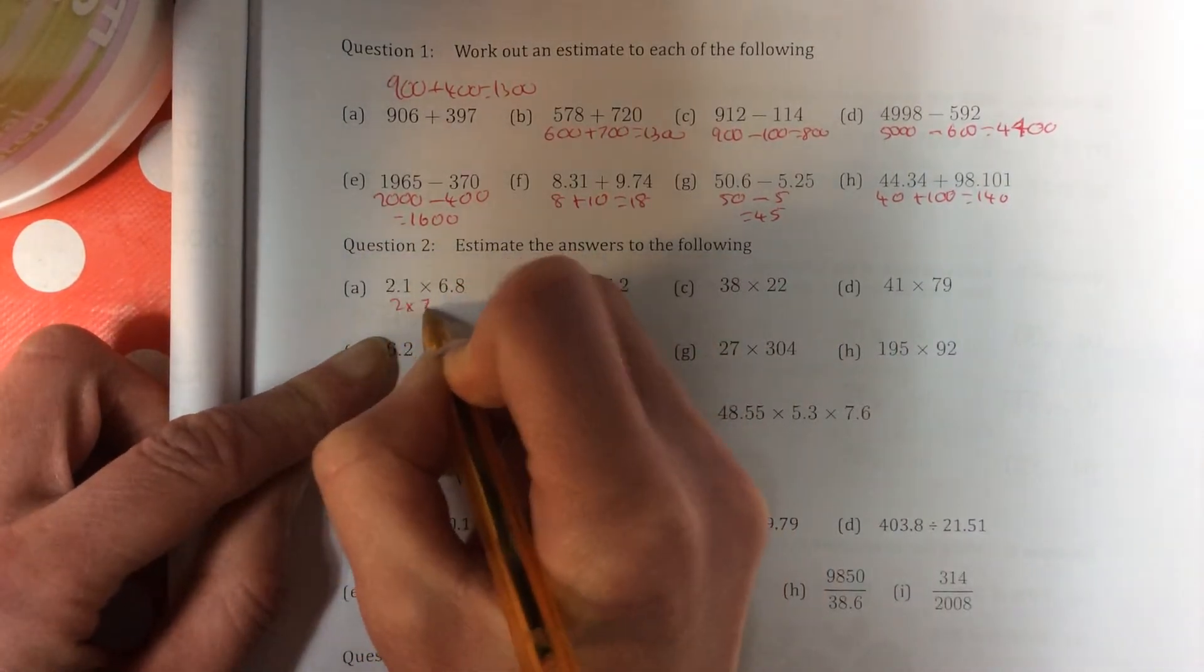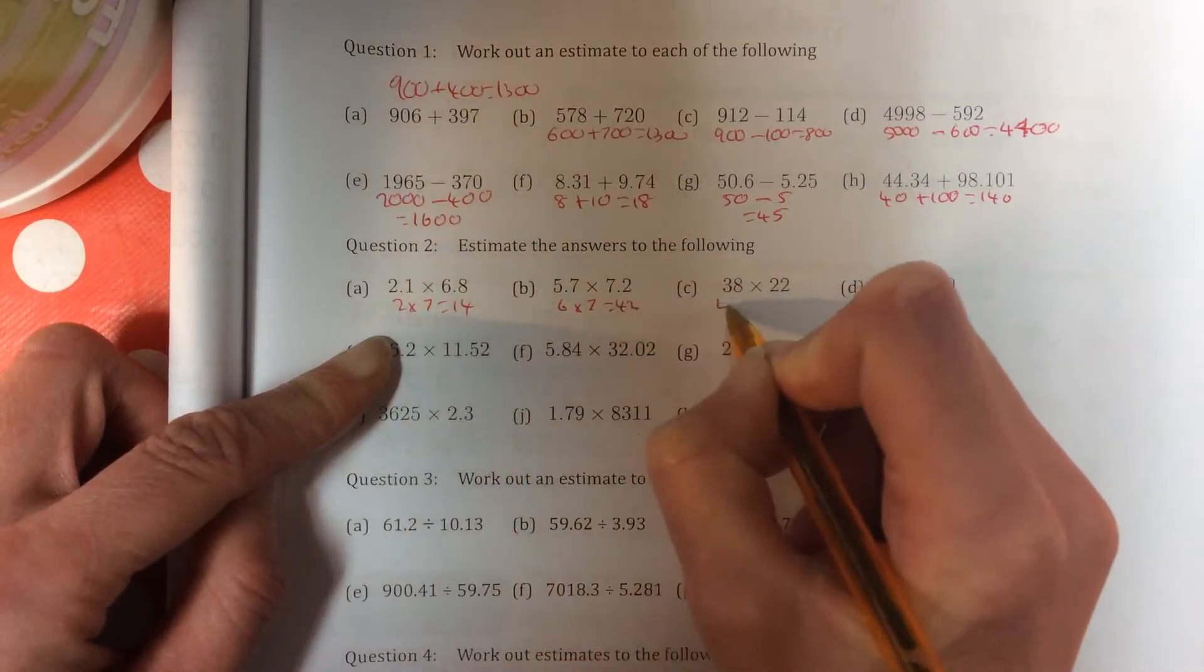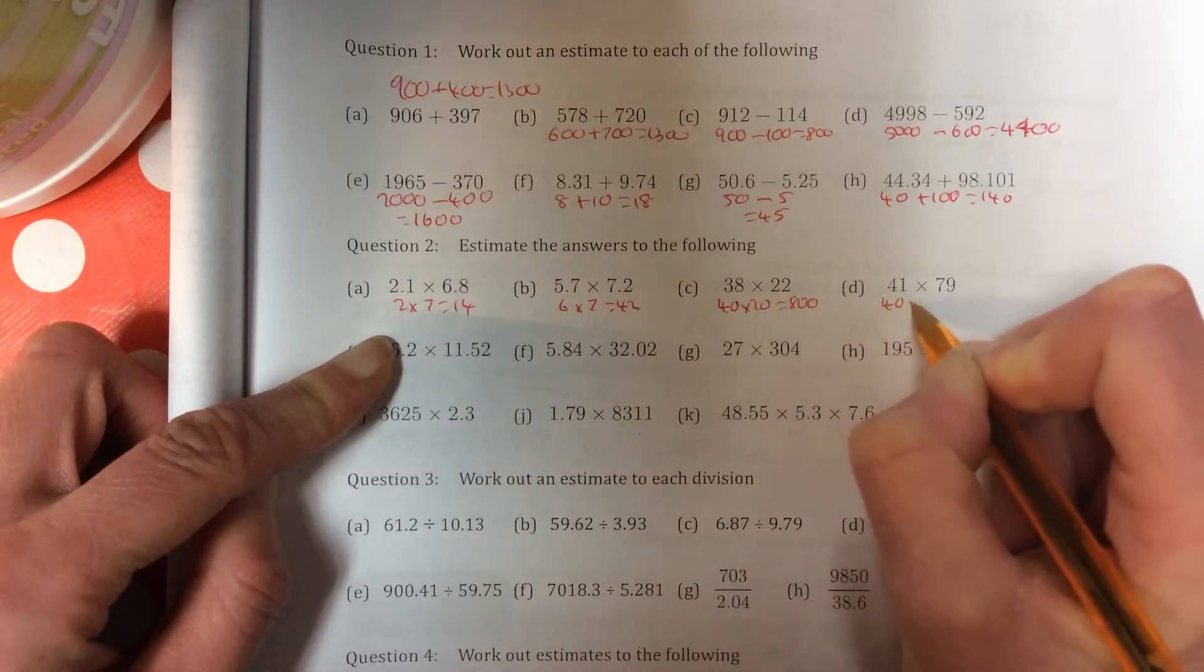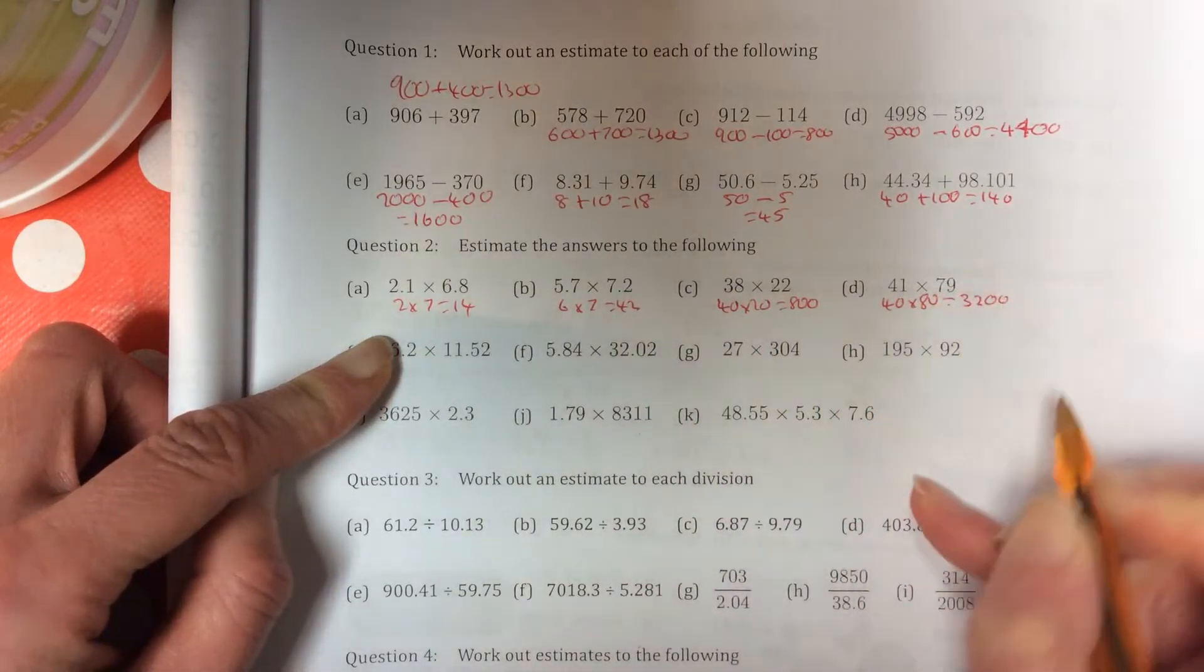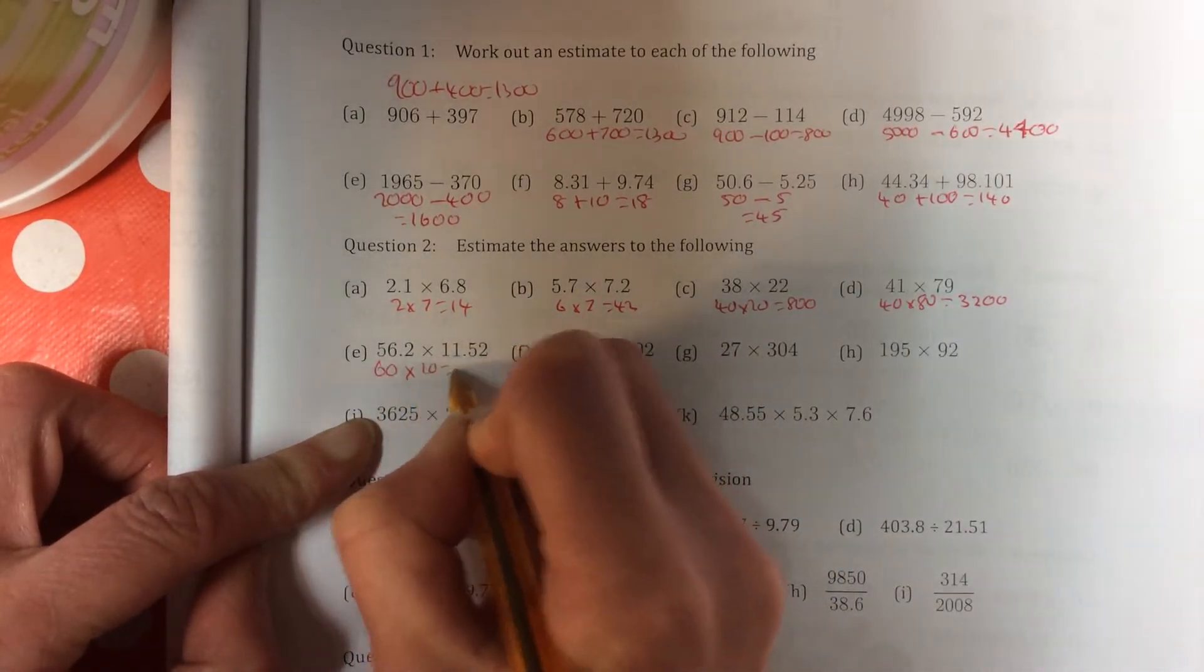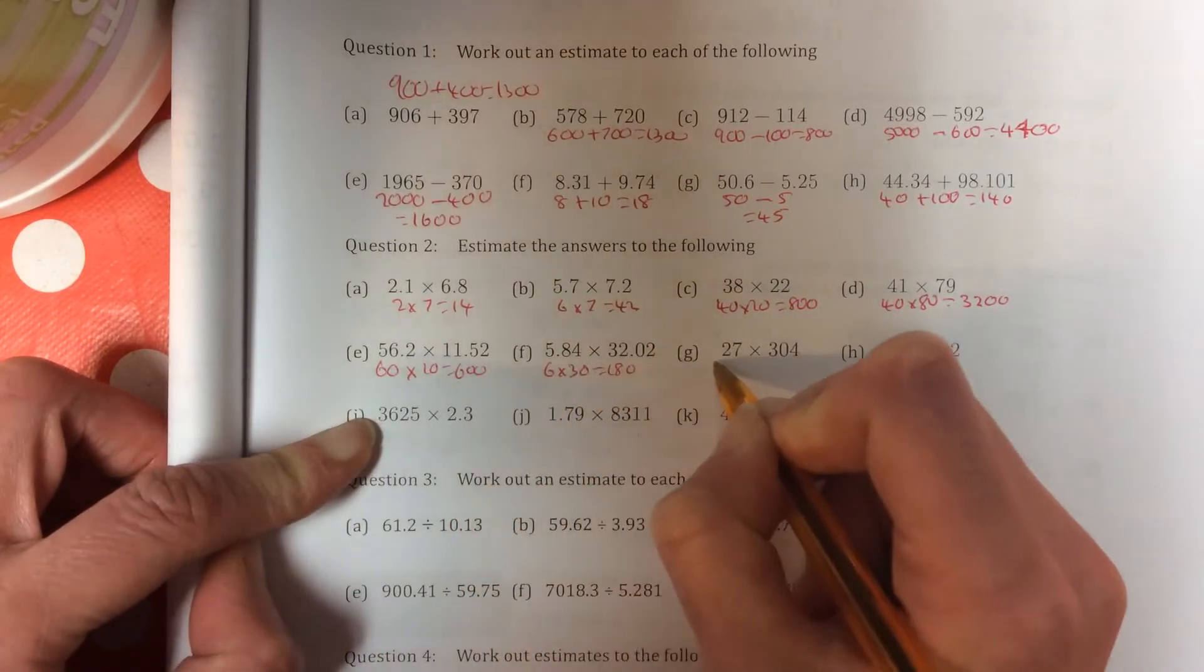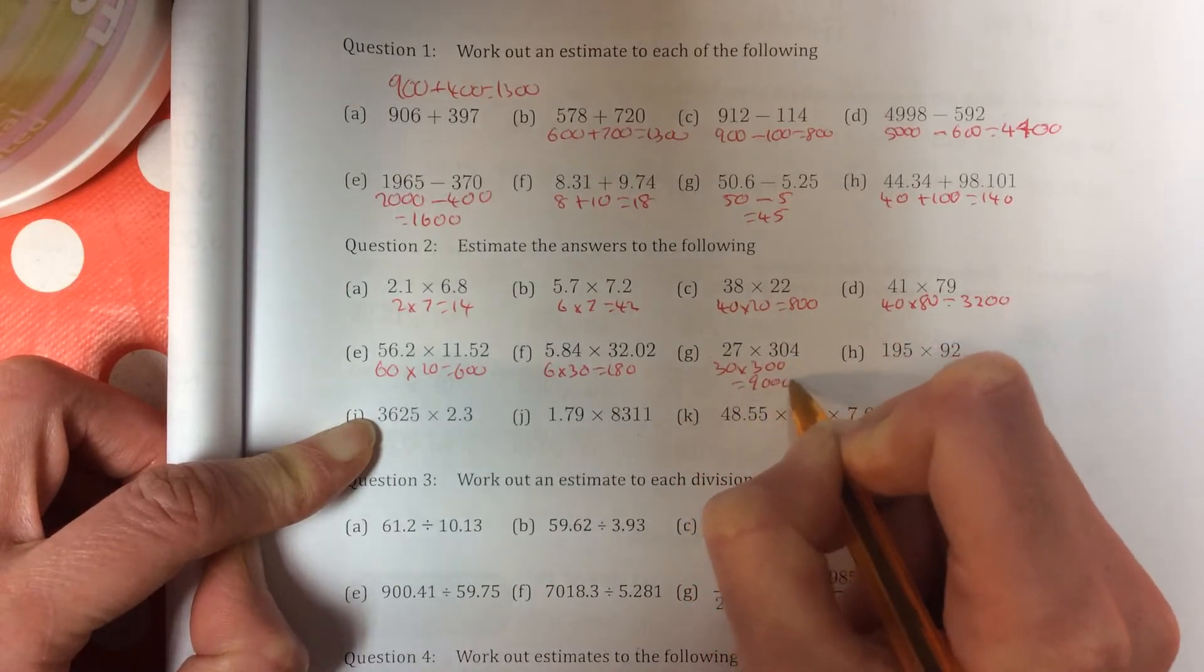2 times 7 is 14. 6 times 7 is 42. 40 times 20 is 800. 40 times 80. 4 8's is 32, and then put down 2 zeros. 60 times 10 is 600. 6 times 30 is 18 with a zero.